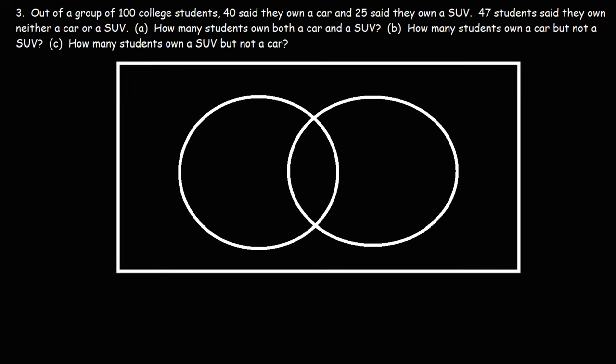Now let's move on to the third problem. Out of a group of 100 college students, 40 said they own a car and 25 said they own an SUV. 47 students said they own neither a car nor an SUV. How many students own both a car and an SUV? To recap: in problem one, we calculated the total; in problem two, the missing element was 'neither'; in problem three, the missing element is 'both.' These are the three types of variations for a two-category Venn diagram problem.